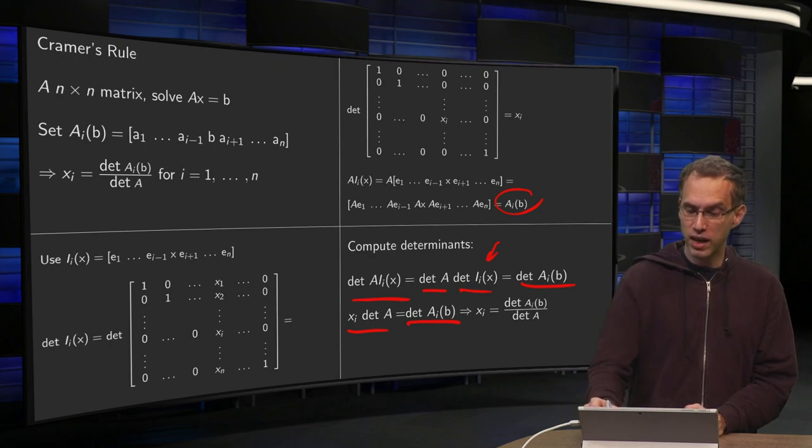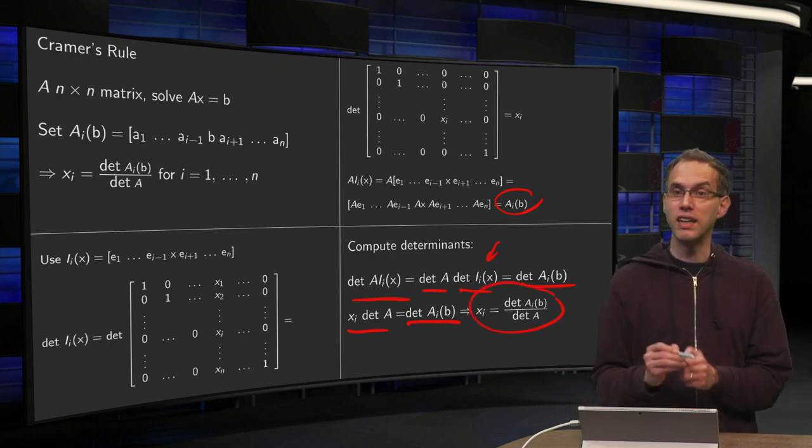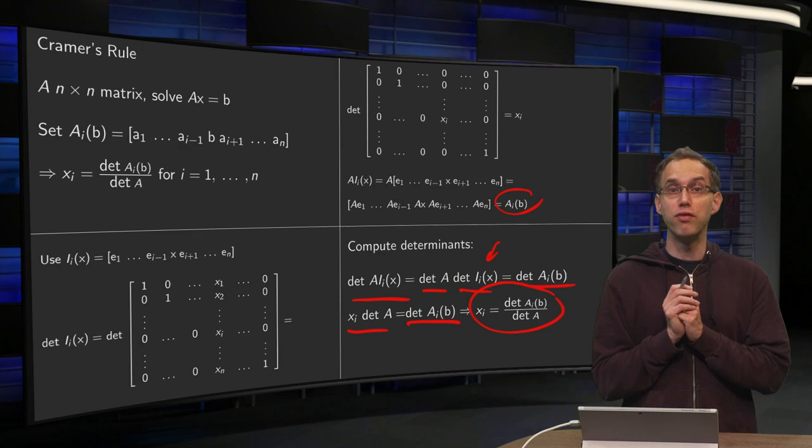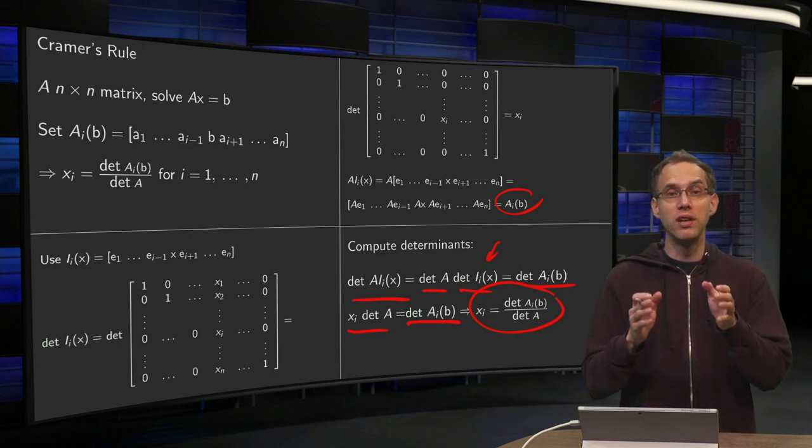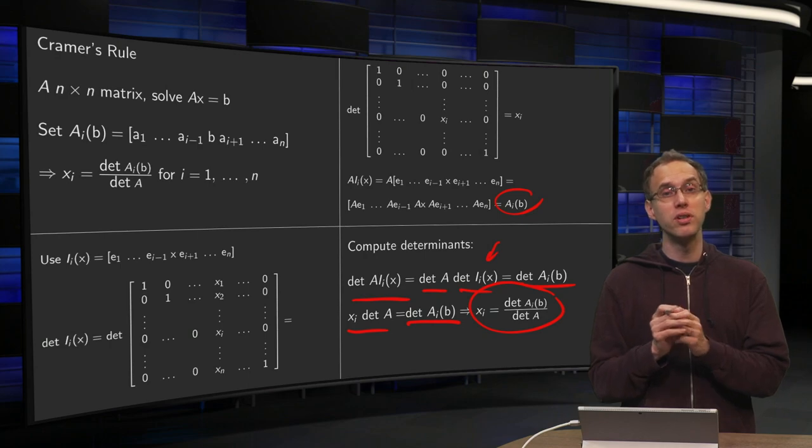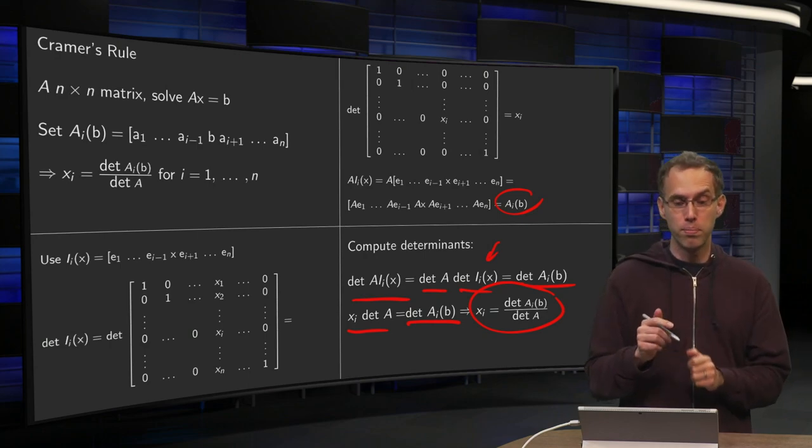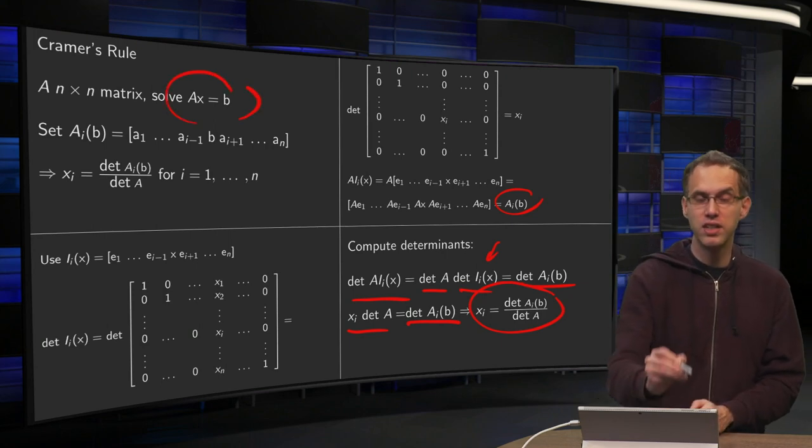There we go. x_i equals det A_i(b) over det A. So there we have our formula for x_i. So that is Cramer's rule. Using just two determinants, you can compute immediately one of the unknowns of your problem Ax equals b.